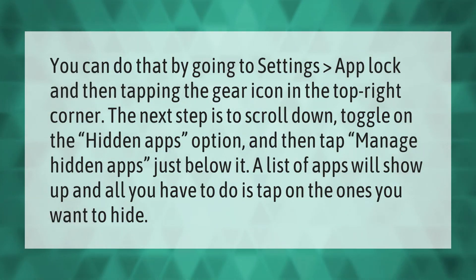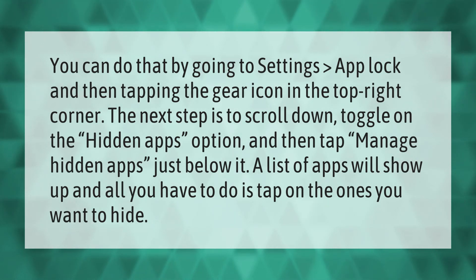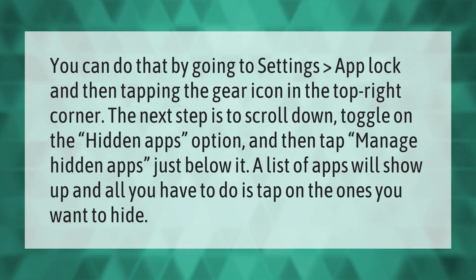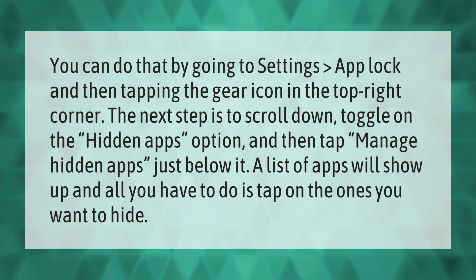You can do that by going to Settings, then App Block, and then tapping the gear icon in the top right corner. The next step is to scroll down, toggle on the hidden apps option, and then tap manage hidden apps just below it.